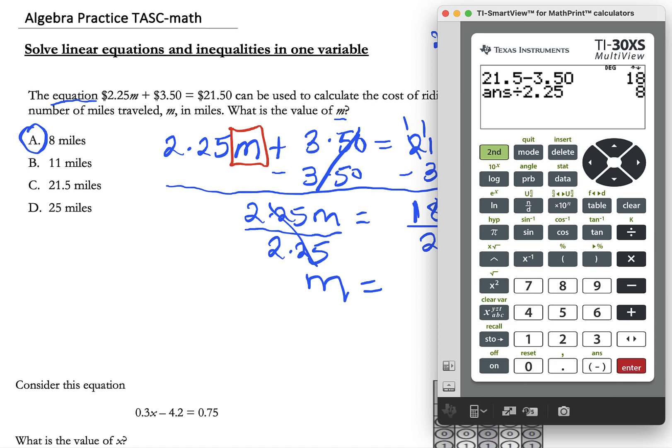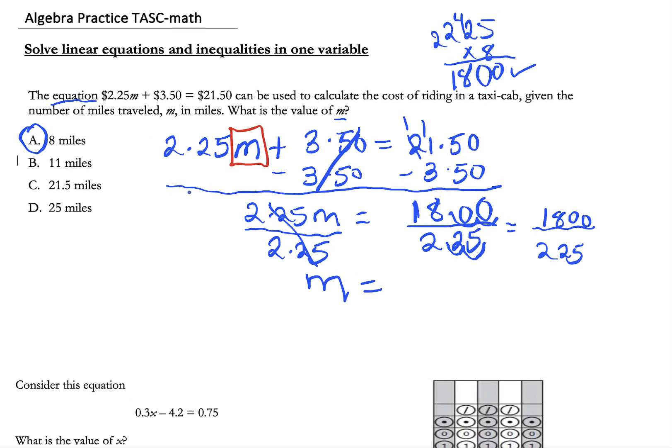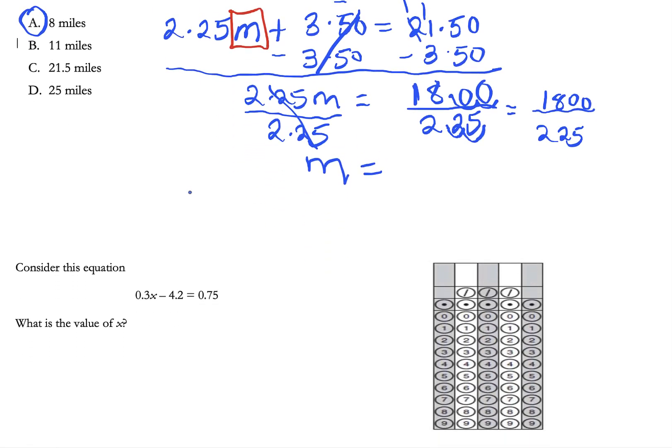Let's move on to the next example. Notice the first one was embedded in a word problem and then this one, sometimes they do on the TASC test give you a question like this: consider the equation 0.3x minus 4.2 equals 0.75. What is the value of x? So notice this one is not in a word problem. So I have 0.3x minus 4.2 equals 0.75.